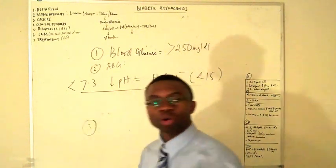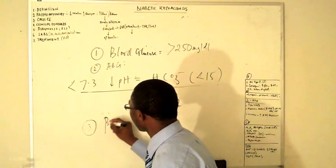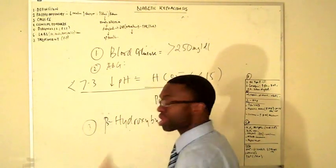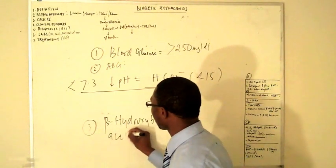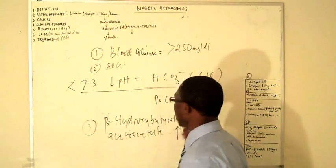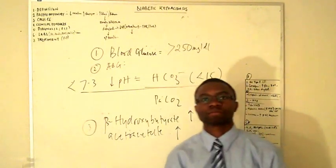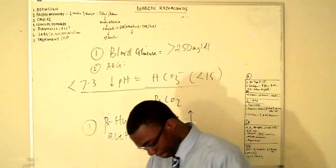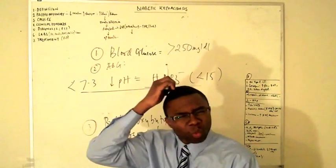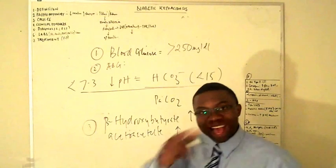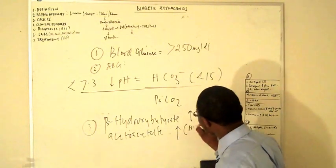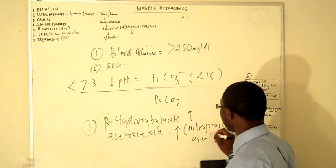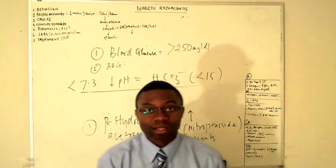Number three. I order ketone levels I check beta hydroxy butyrate, elevated. Acetoacetate, elevated. Board question: What agents do we use to measure acetoacetate? Nitroprusside agents baby! Nitroprusside agents. That's what we use to measure acetoacetate in the lab.